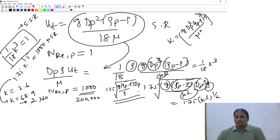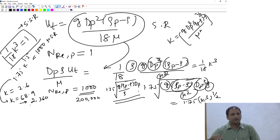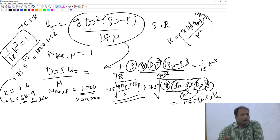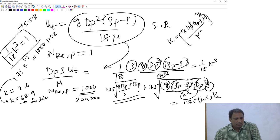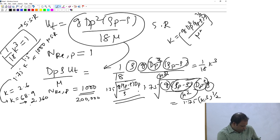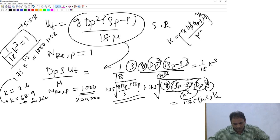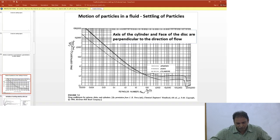This formalism - calculating k as a criterion for deciding whether to use Stokes or Newton's settling regime - is useful instead of doing guesswork and back-calculating Reynolds number. It was just a rearranging of the expressions for u_t and equating to the limiting values of Reynolds number for the respective conditions.